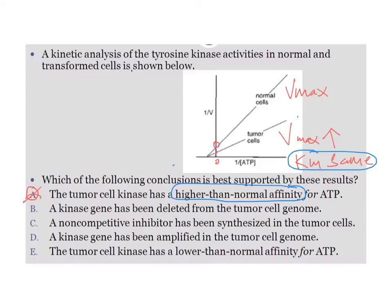Option E says the tumor cell kinase has lower than normal affinity. Lower than normal affinity means Km is increased. Km negatively correlates with affinity: higher the Km, lower the affinity; lower the Km, higher the affinity. We have already seen that Km remains the same in both lines, so Km is not really increased here, making option E incorrect.